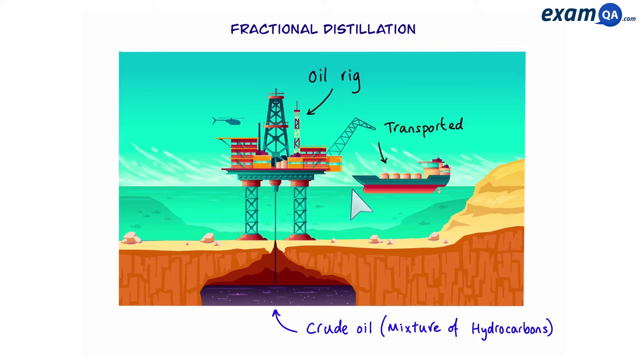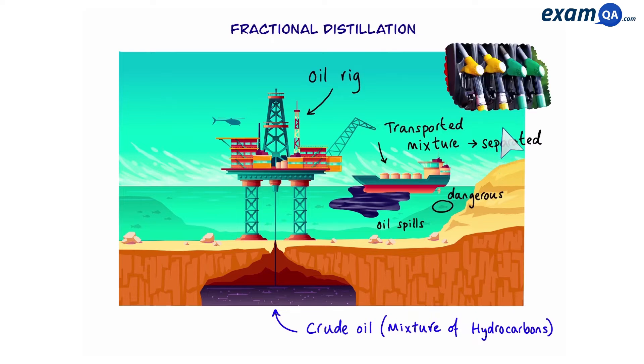Then it's transported to land on these big ships where the crude oil can be refined and used. However, a quick side point, sometimes these ships can spill oil into the ocean and this can be dangerous to organisms living in the ocean. However, if it makes its way safely to land it then gets separated so that we can have fuel for different purposes.